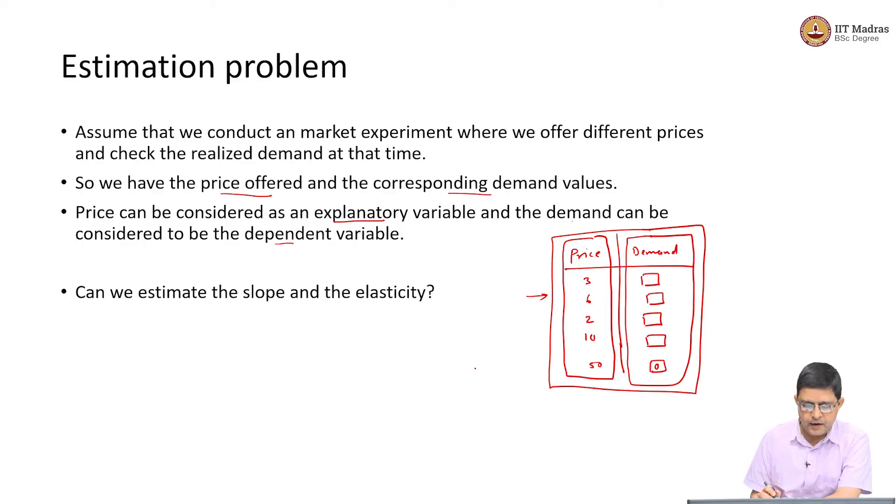Now, from this, I want to estimate what may be the slope, I want to estimate what may be the elasticity. The elasticity may not be constant. However, if my relationship looks like d equals c times p to the power of negative epsilon, I may think of having a constant elasticity. Slope may come in only when I am talking about a linear relationship.